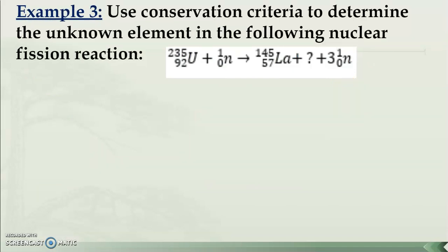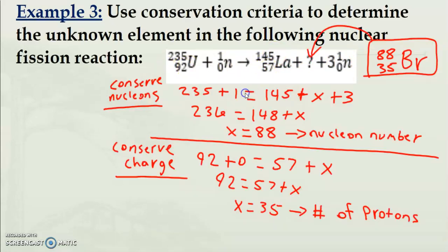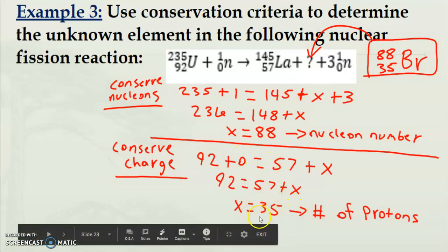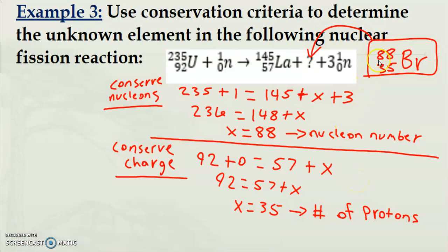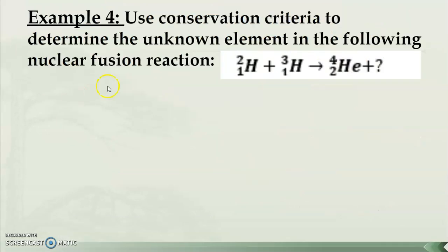Example 3: use conservation laws to find the unknown element in a fission reaction. Add mass numbers: 235 + 1 = 236; subtract 145 + 3 = 148; so the unknown mass number is 236 − 148 = 88. For charge: 92 − 57 = 35 protons. Looking up atomic number 35 on the periodic table gives bromine. So the missing daughter nucleus from this fission reaction is bromine-88.